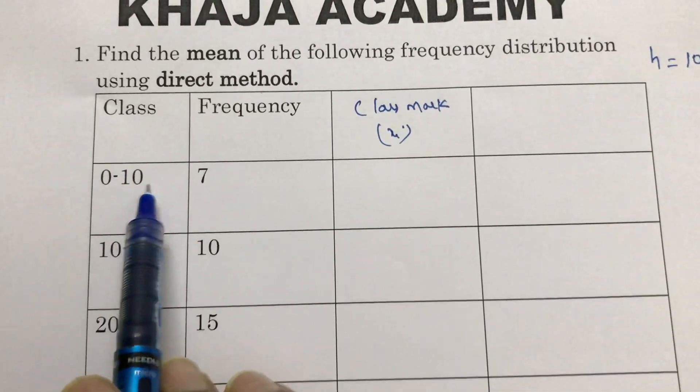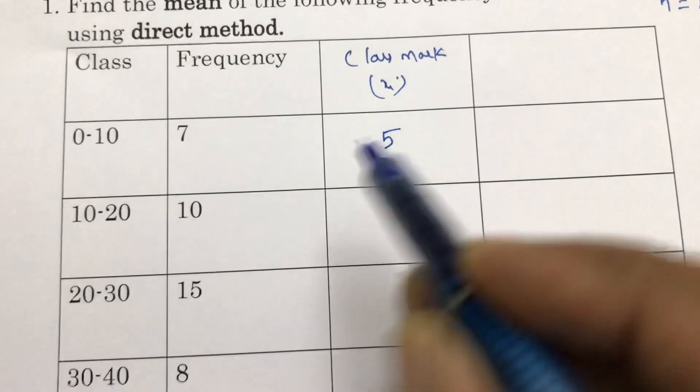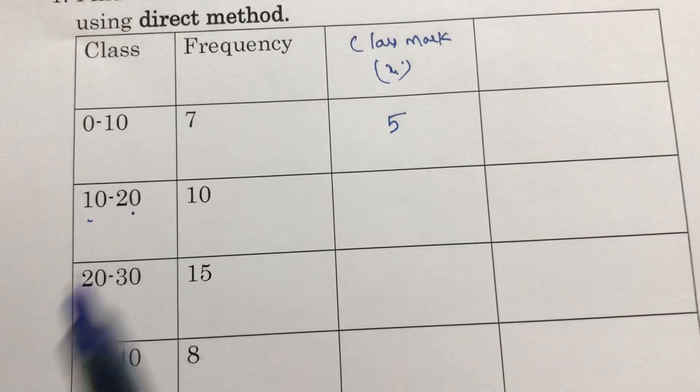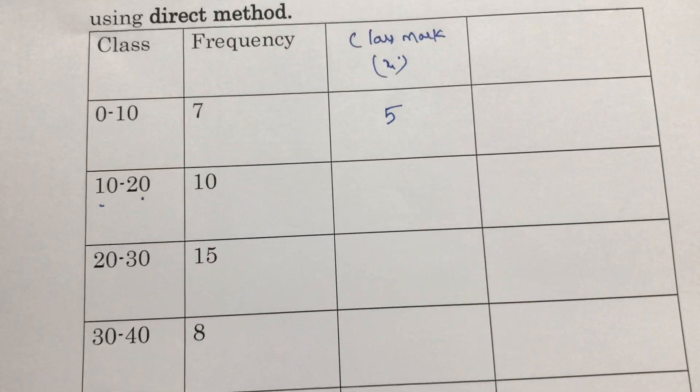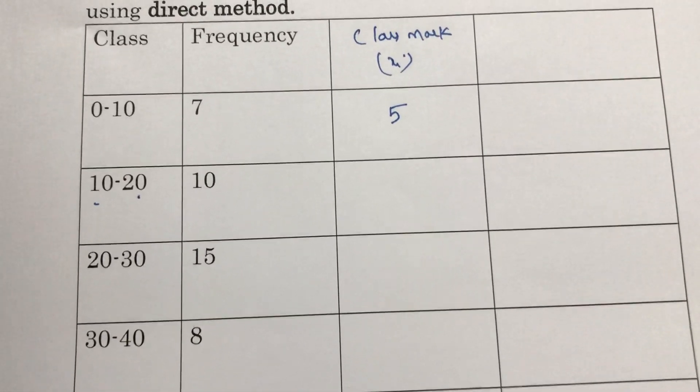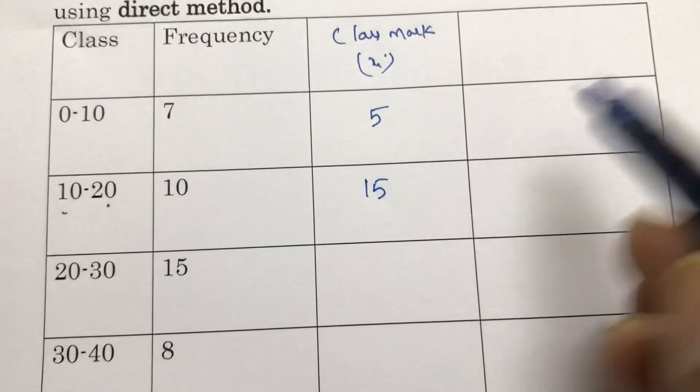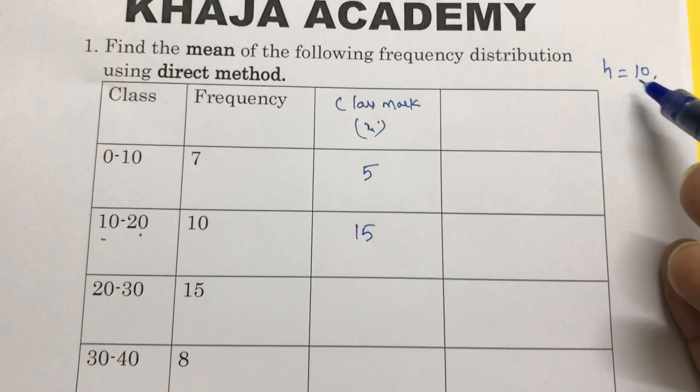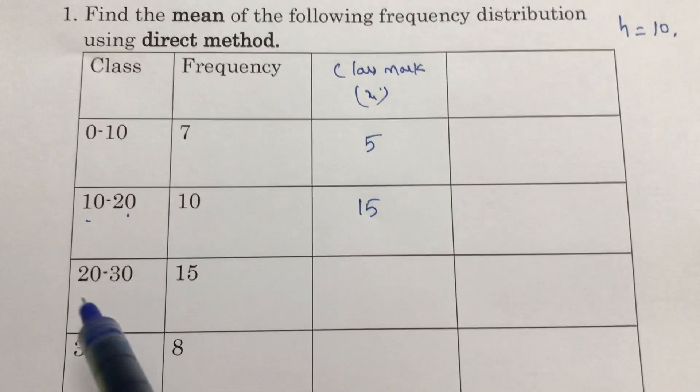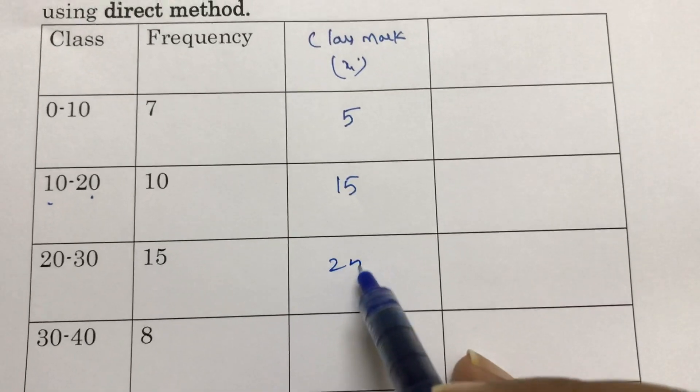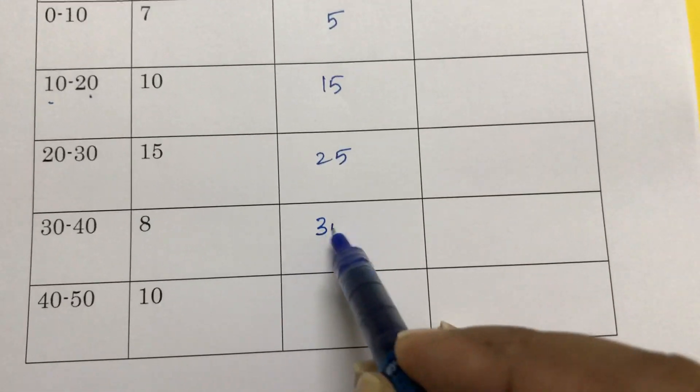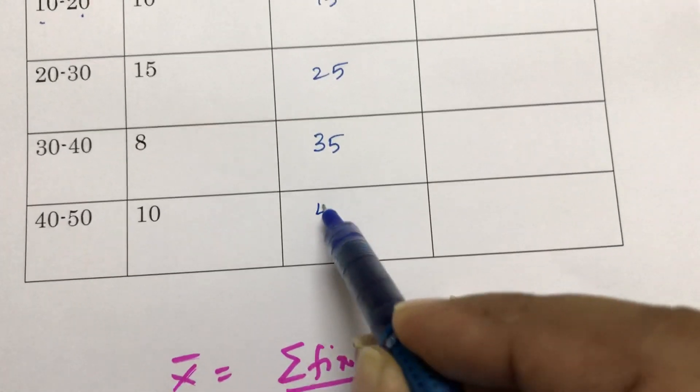So class mark: 0 plus 10 by 2, that is 5. 10 plus 20, that is 30, by 2 is 15. Next you can add this class size values, or otherwise you can calculate 20 plus 30 by 2. 25 plus 10 is 35, plus 10 is 45.